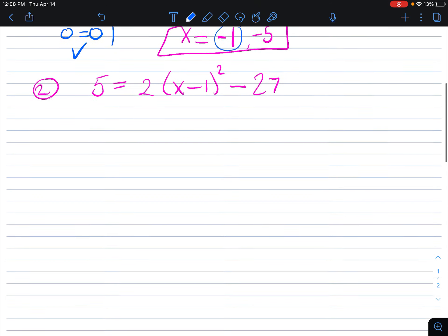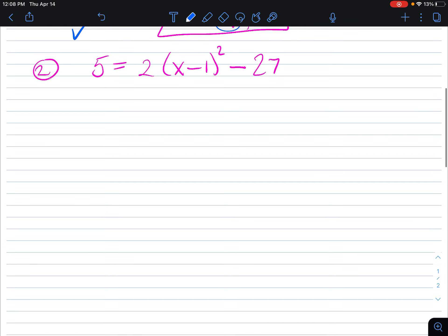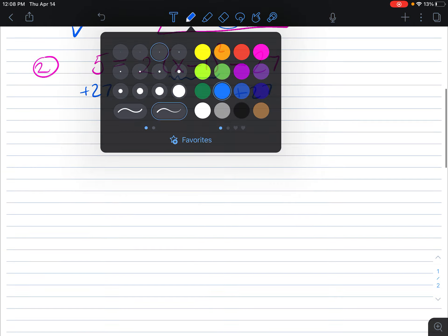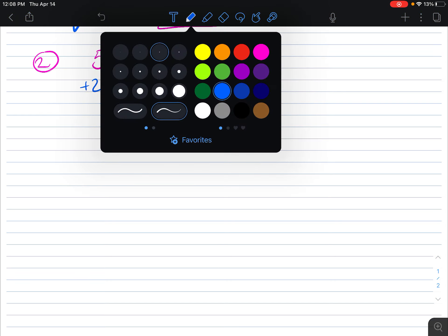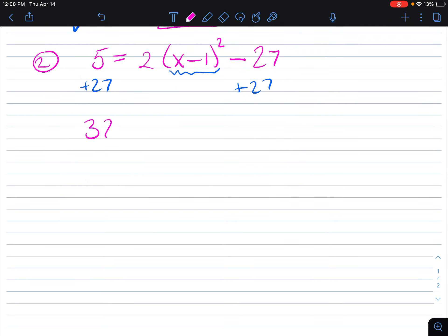Okay, now a level up from there is if we have to undo more things. So in this case, I would add 27 to both sides. And again, I'm trying to isolate the squared piece here. So for this, we would get 32 equals 2 times the quantity x minus 1 squared.